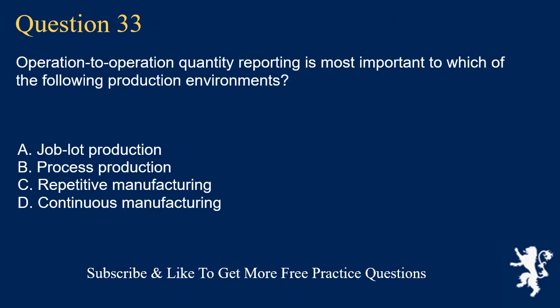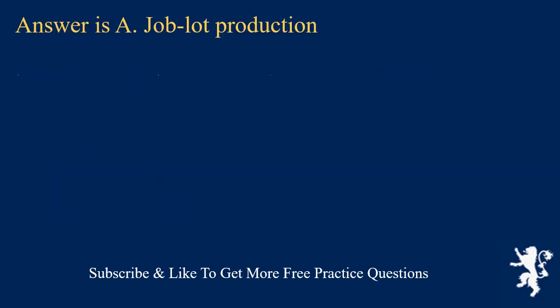Question 33. Operation to operation quantity reporting is most important to which of the following production environments? A. Job lot production. B. Process production. C. Repetitive manufacturing. D. Continuous manufacturing. Answer is A. Job lot production.